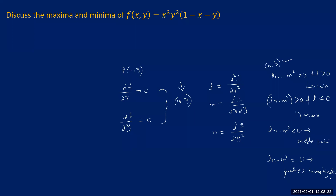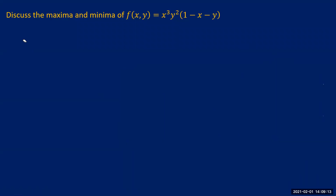Keeping all this procedure in view, let us find the maximum and minimum of this particular function. The function given in the question is f(x, y) = x³y²(1 − x − y).